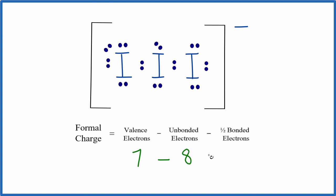We have 8 minus bonded, these 2 right here, 2 over 2. So 7 minus 8, that's going to be minus 1. And then minus 1, we get a minus 2 charge on this iodine right here.